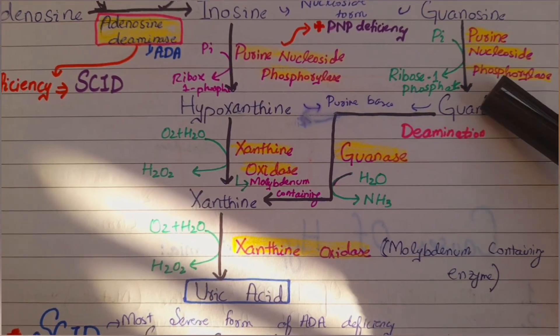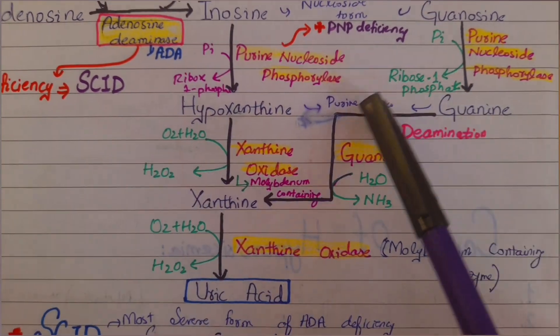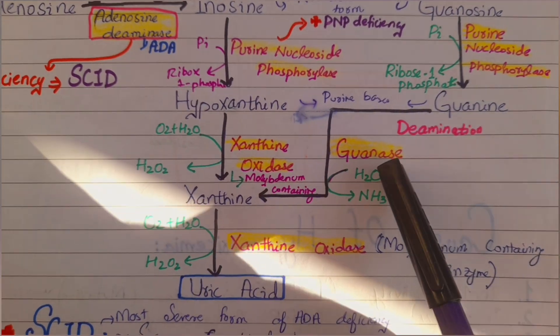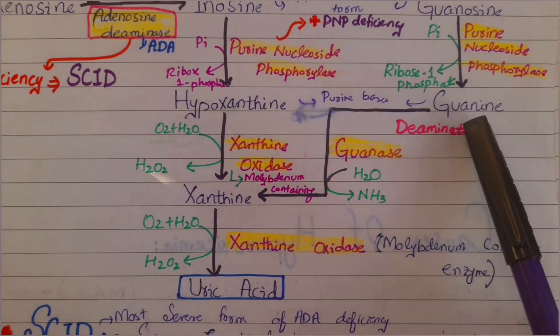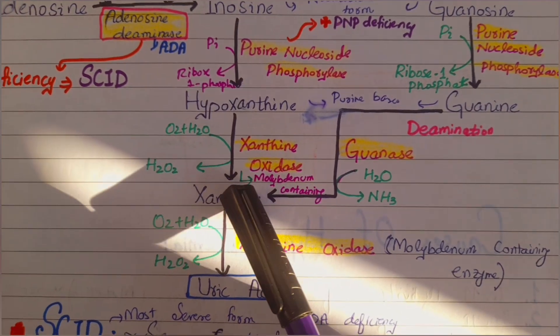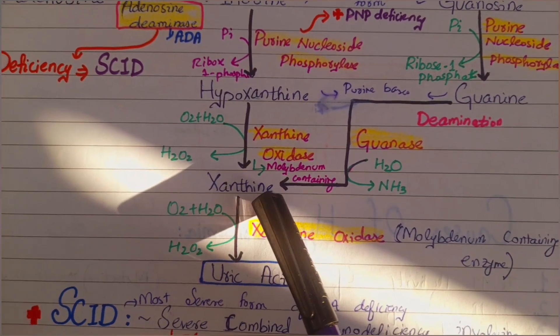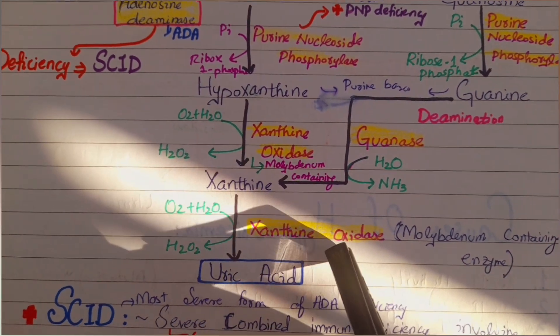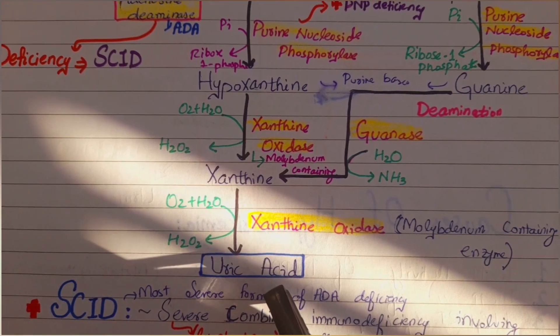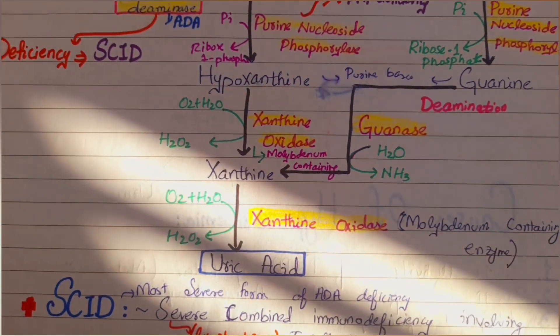Guanine can also be converted to xanthine in the presence of the enzyme guanase, which deaminates it. Xanthine is then further oxidized by xanthine oxidase, and finally uric acid is formed.